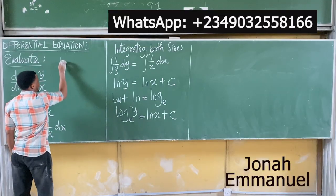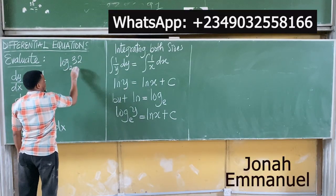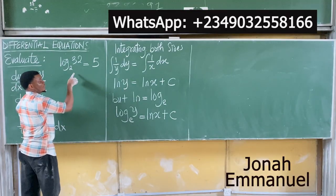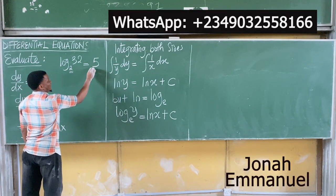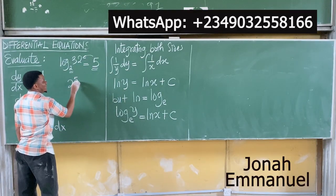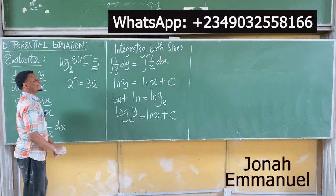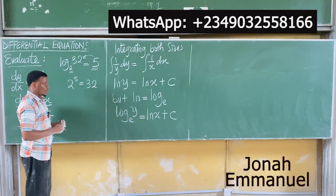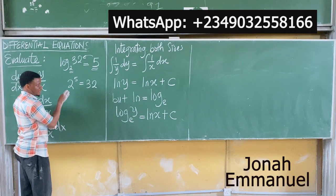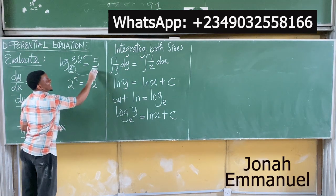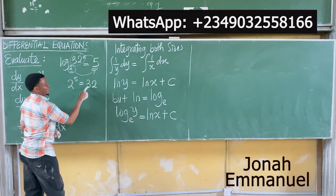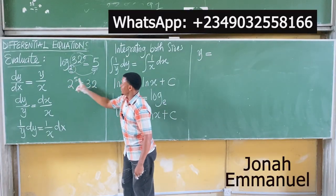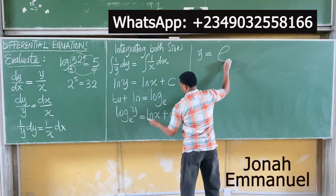We know that log base 2 of 32 equals 5. To convert from log form to indices, the base raised to the power of the answer equals the number — so 2 raised to power 5 equals 32. Comparing this to our equation: y equals e raised to the power of ln x plus c. The base e raised to the answer equals y.